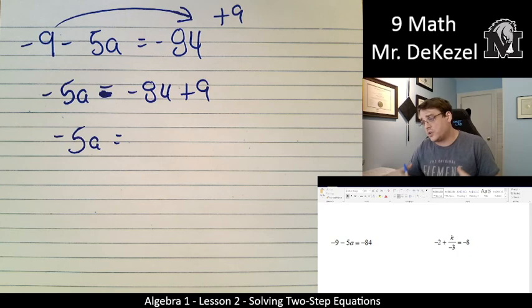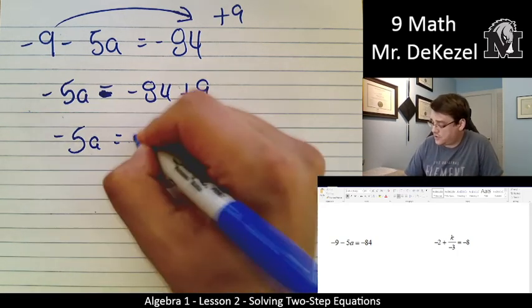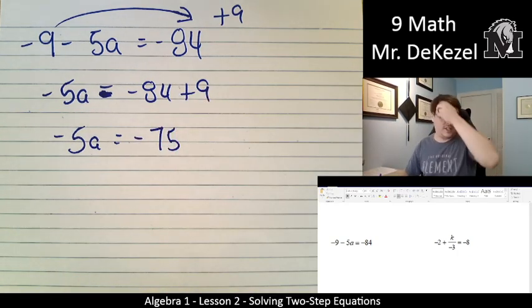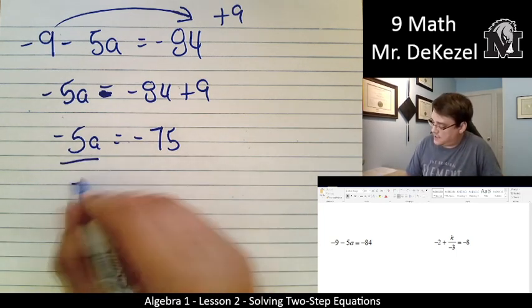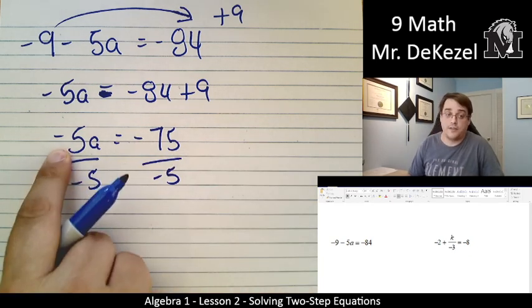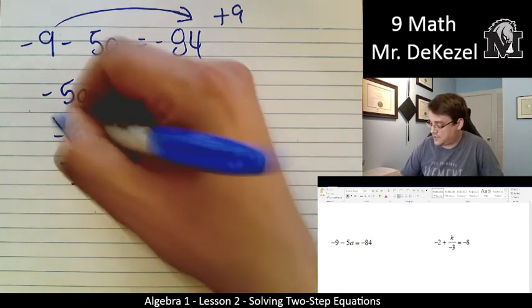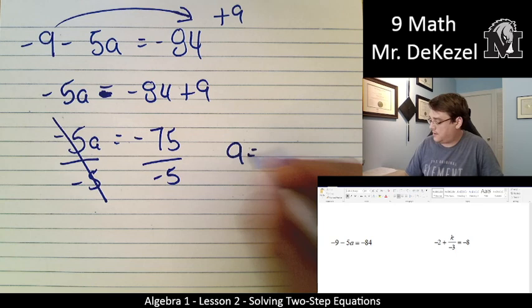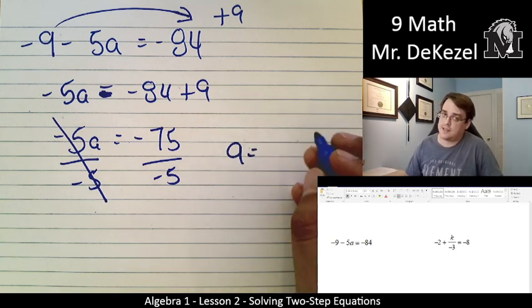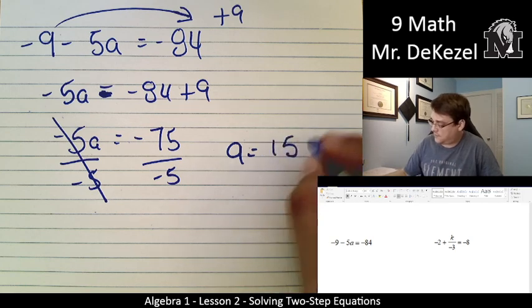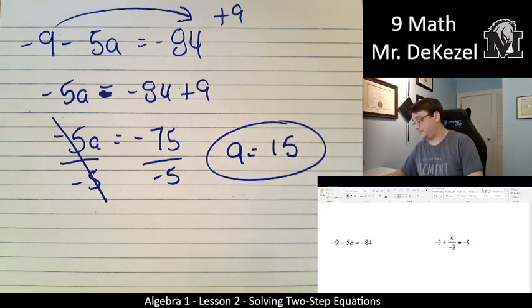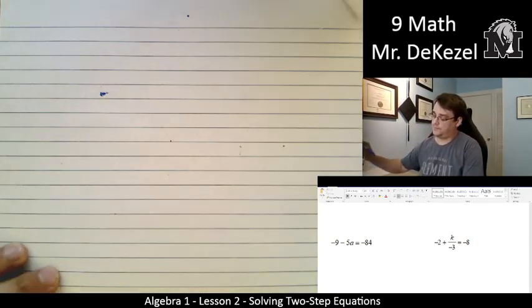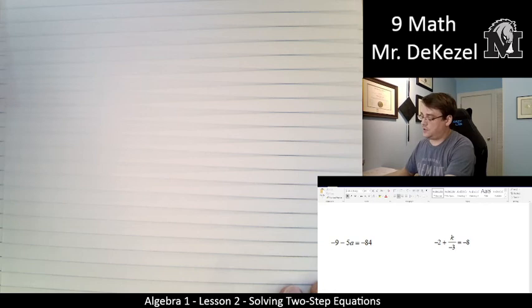Minus 5a is equal to minus 84 plus 9. That would go towards 0. So that's actually minus 75. It's very convenient. Divide both sides by minus 5. It's on top on that side. It goes on the bottom on this side. So a is equal to, let's see, 75 divided by 5 is 15. And they're both negative, so that's why it's positive.